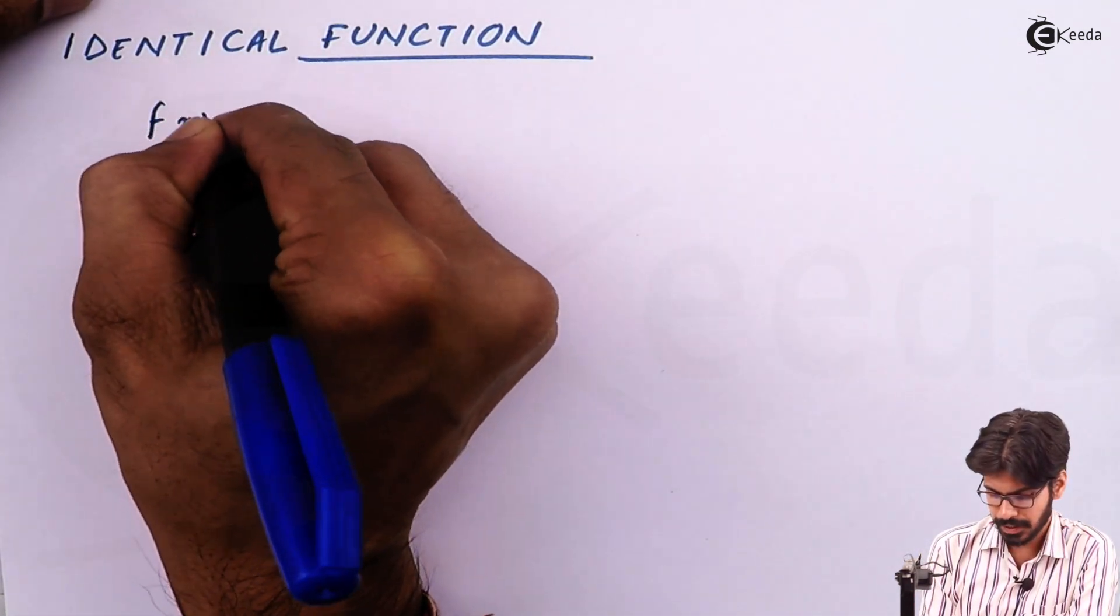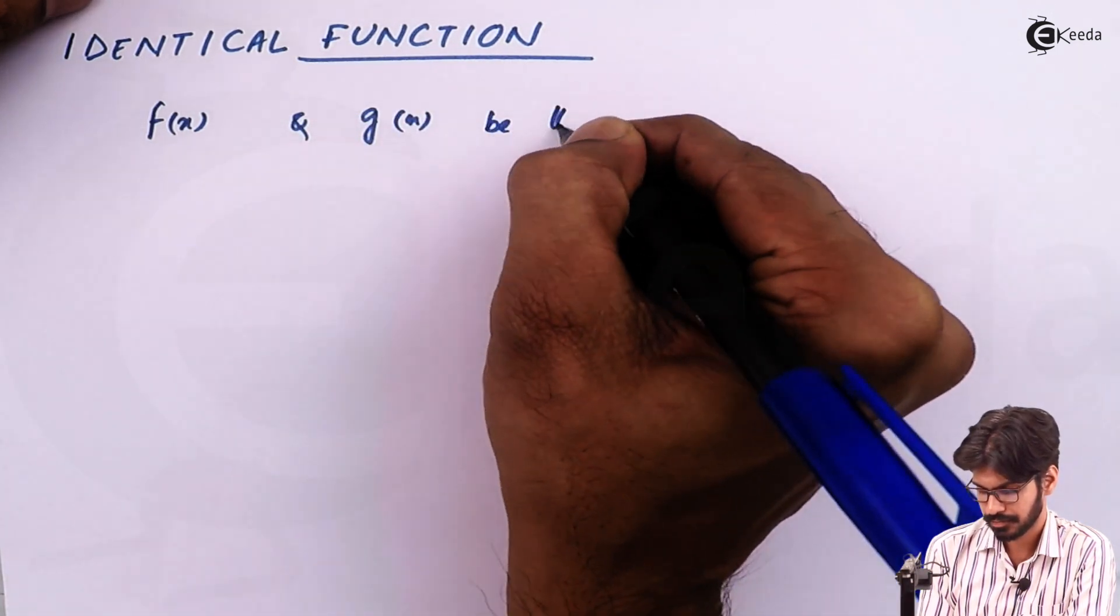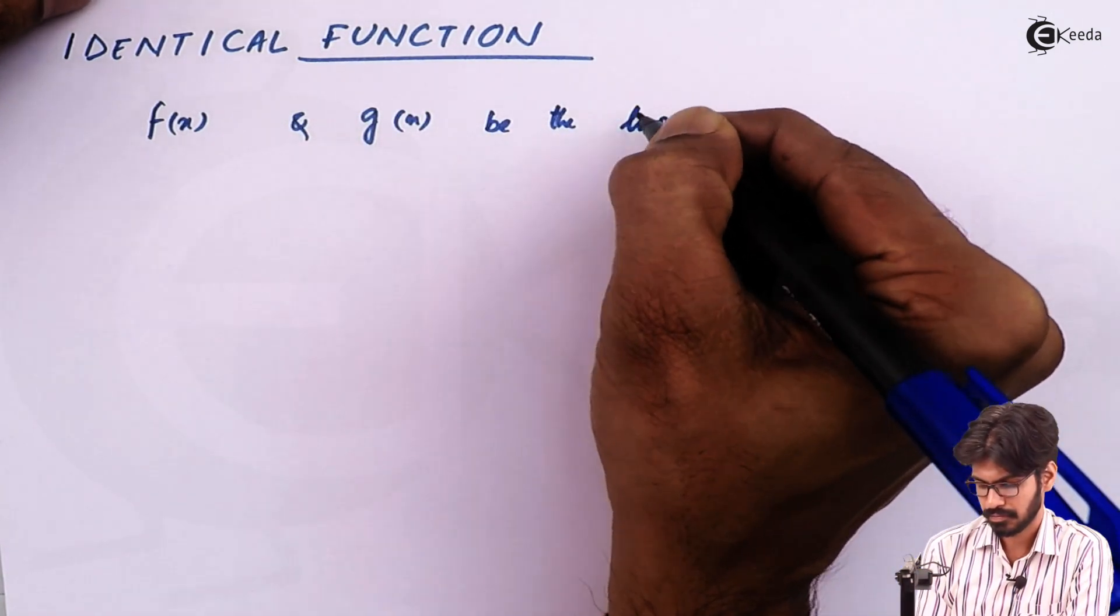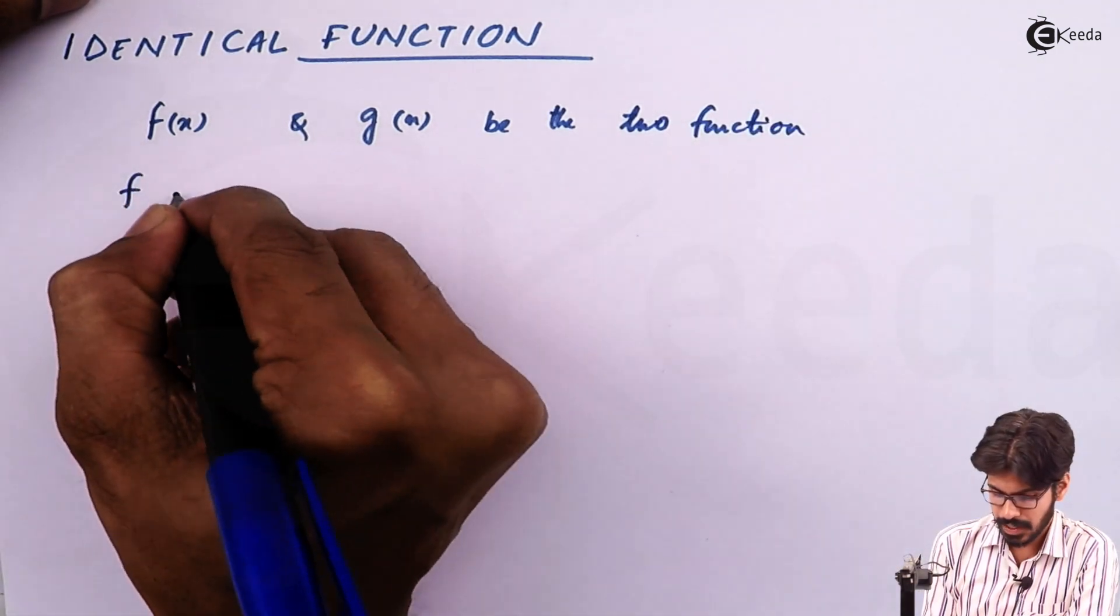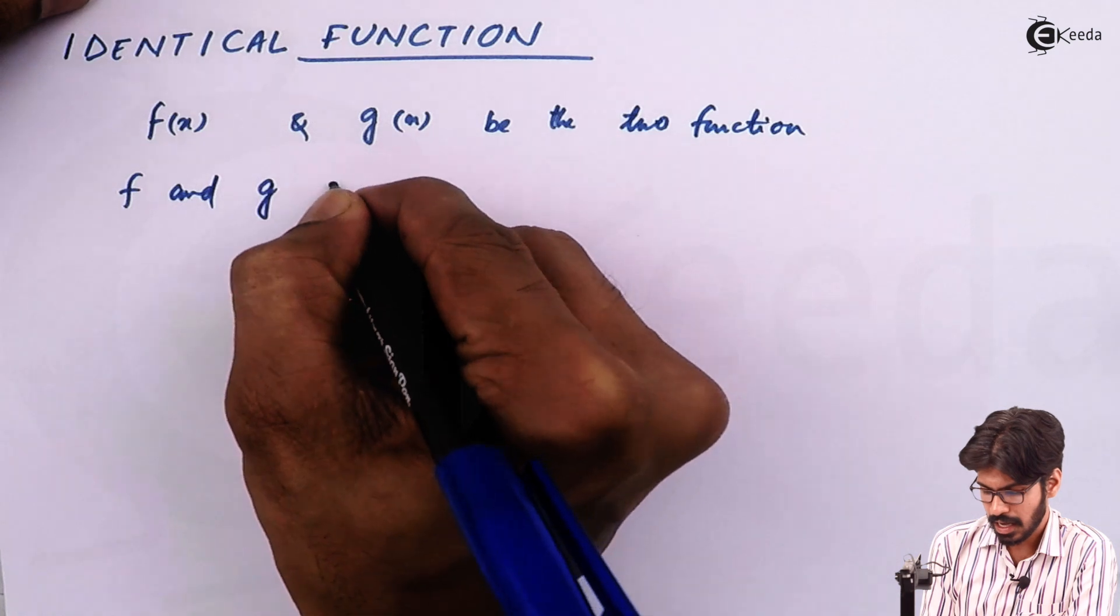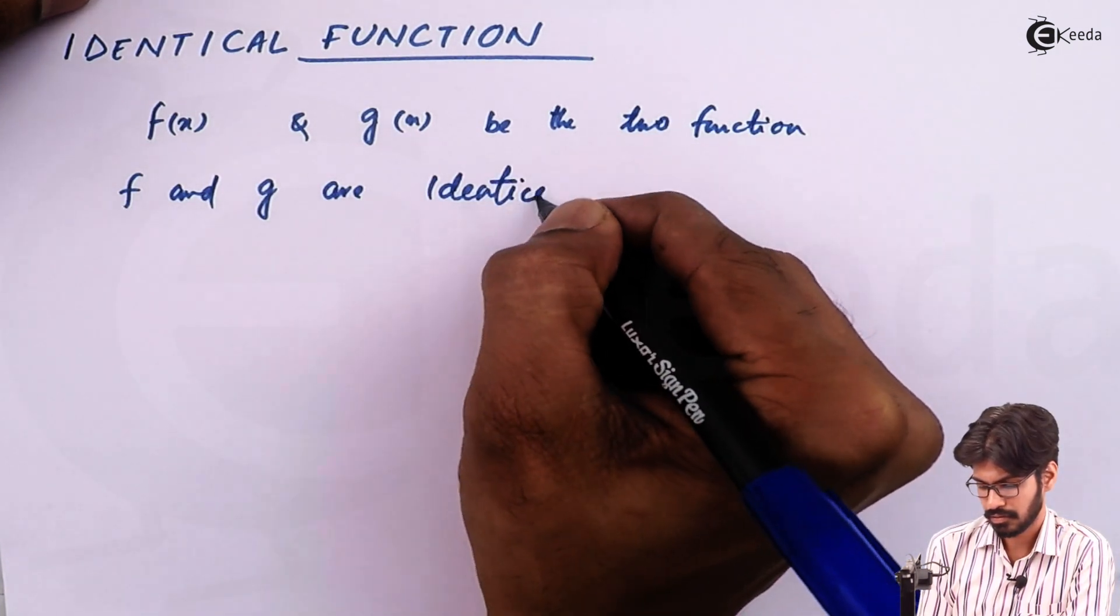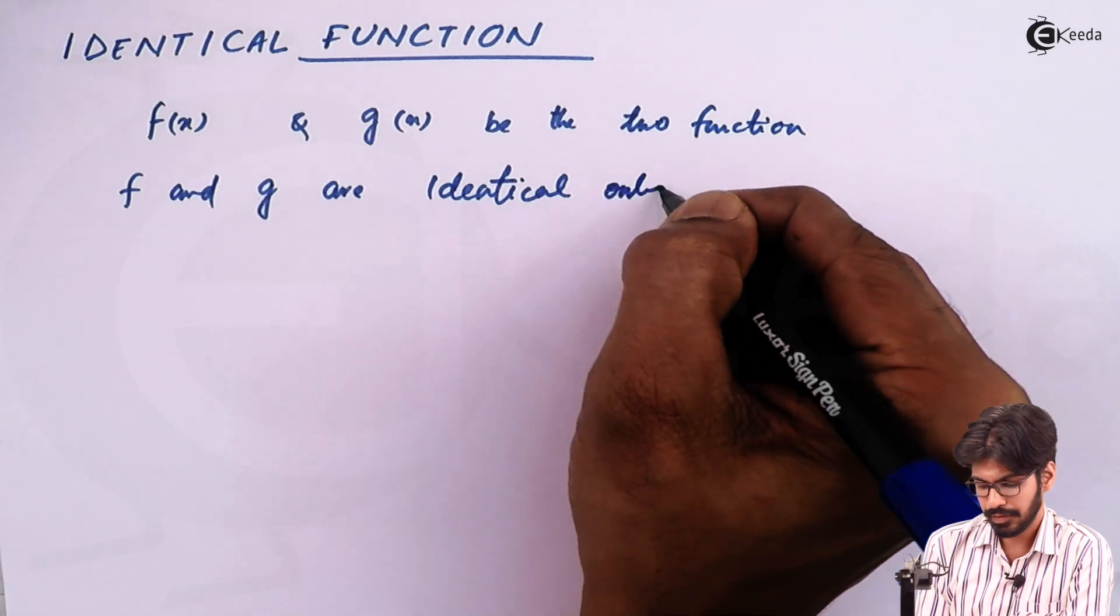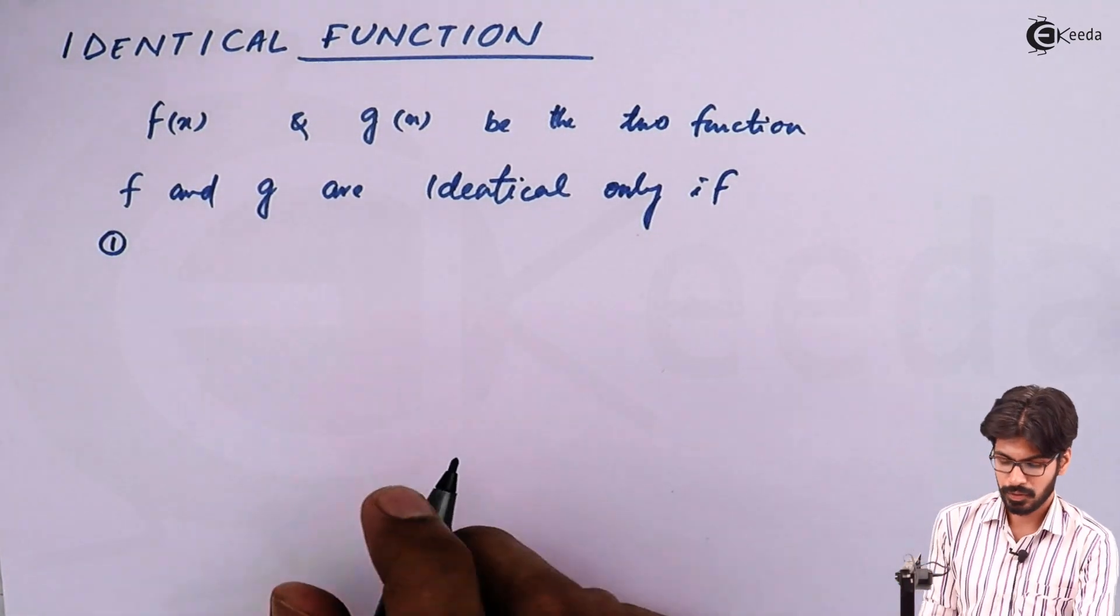Let f and g be the two functions. Now f and g are identical only if the three following conditions are satisfied. What are the conditions?